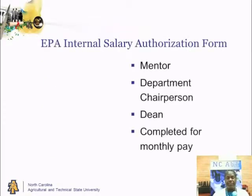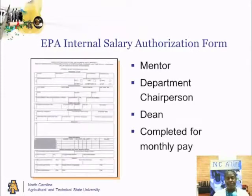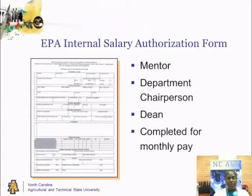The EPA Internal Salary Authorization Form — who completes this form? It is completed by your mentor, the department chair, and the dean, and it is completed for monthly pay. This form is found on the Human Resources website and is not completed by you, the graduate assistant. It is completed by the mentor, department chair, and dean for your monthly pay.